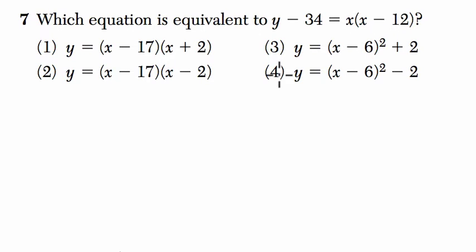Now, we could go through each of these, simplify them, multiply, and see which equals. But I want to take a more direct approach. What I'm going to do is first rewrite the equation. y minus 34 equals, I'm going to distribute the x. So I get x squared minus 12x.